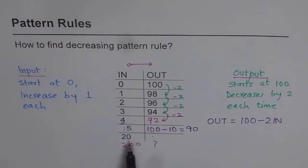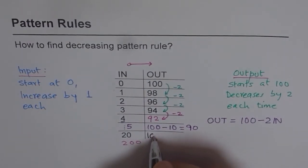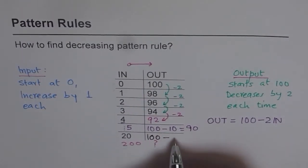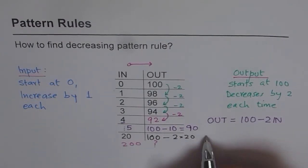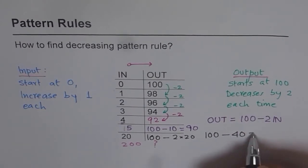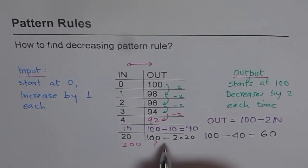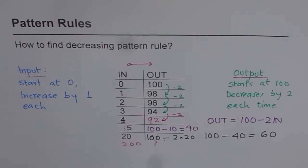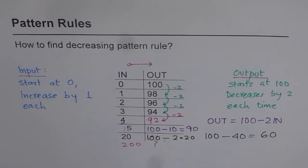Well, then in that case, it should work for 20, 200 or any other number. So, let's see, what should I get for 20? Well, let's calculate. For 20, it should be 100 take away 2 times 20. That is, 100 take away 2 times 20 is 40. And 100 take away 40 is 60. That should be number here. Why don't you check it out? Write all the numbers up to 20 in its input and all the numbers in the output and check it out for yourself. You will get this as the right answer.